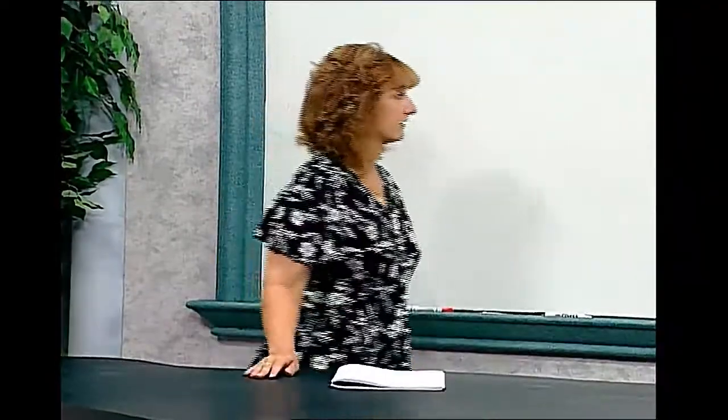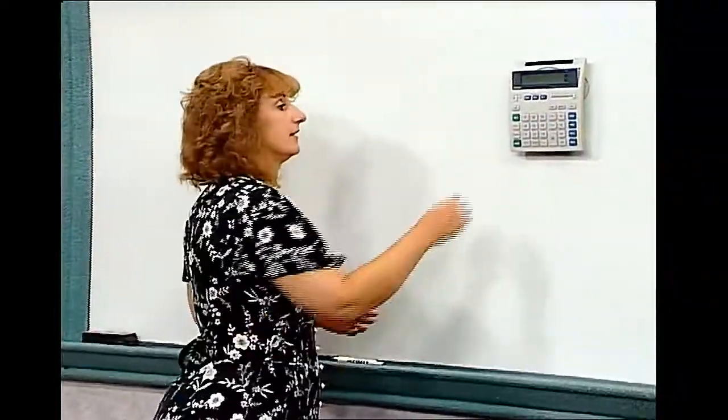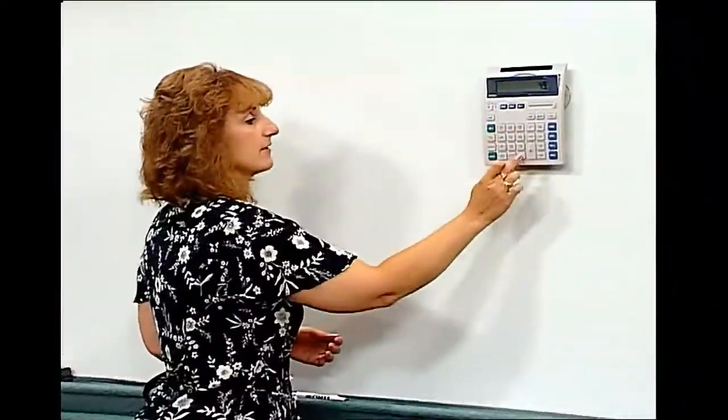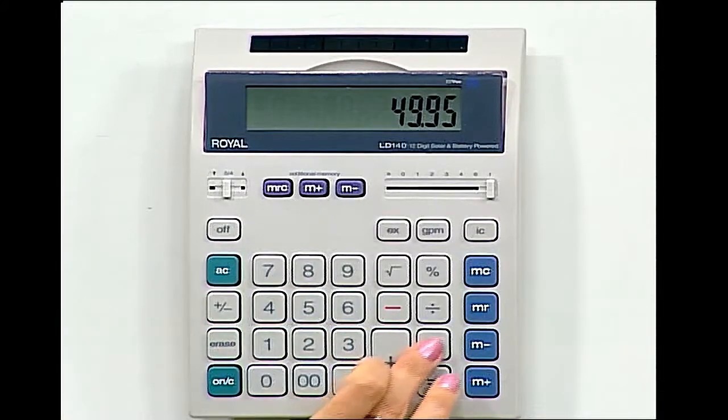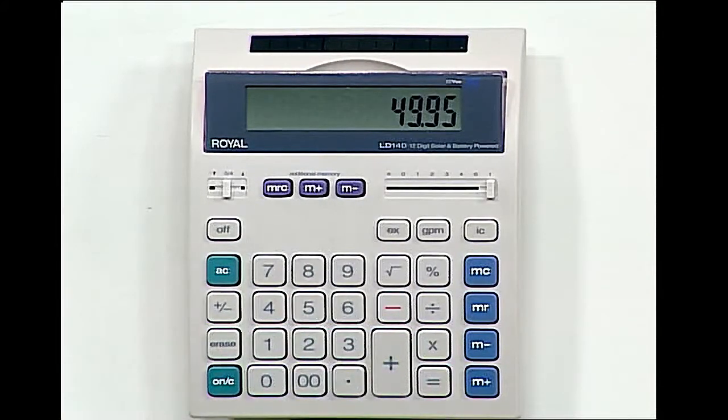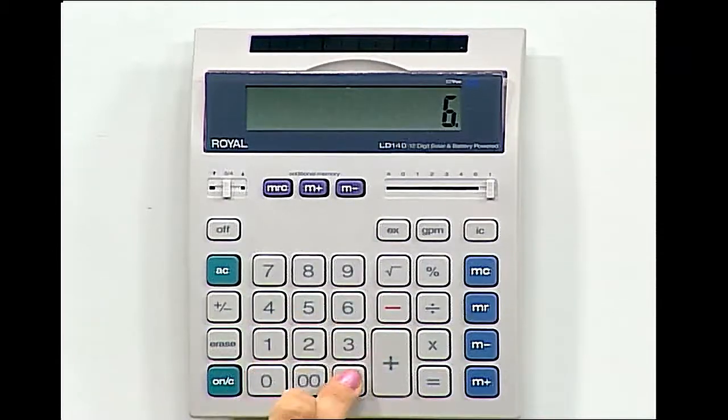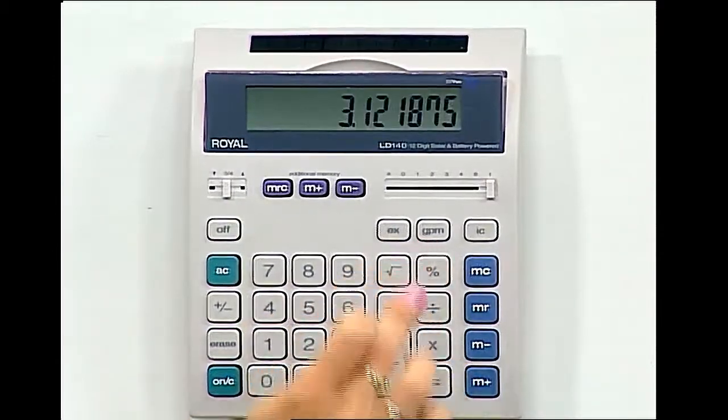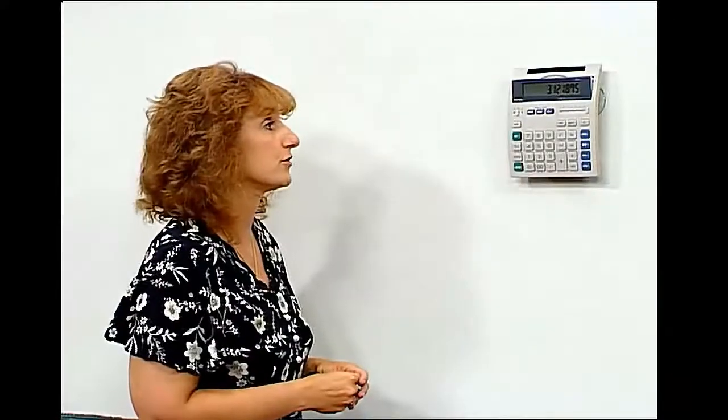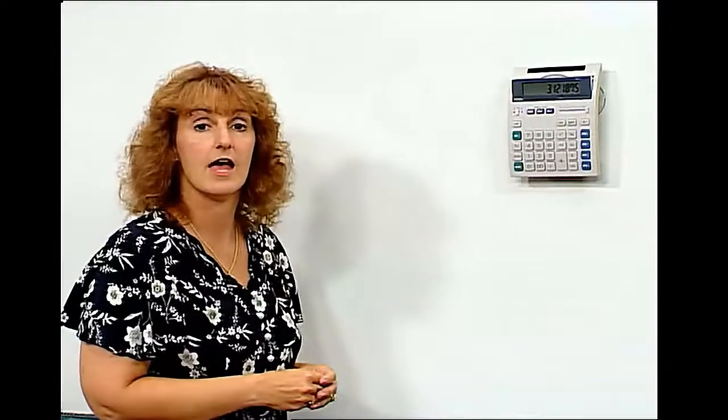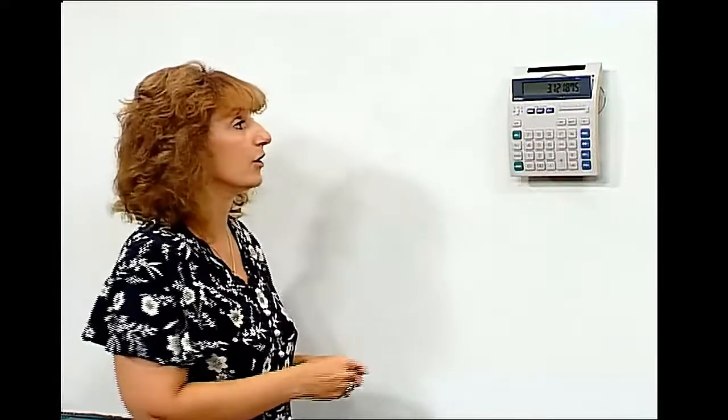If we look at our calculator, we're going to put in our $49.95. Remembering that six and one-fourth is six point twenty-five, we multiply by six point twenty-five percent, and we find the sales tax to be three point one two one eight seven five. And knowing that we're talking about money, we would round that to three dollars and twelve cents.